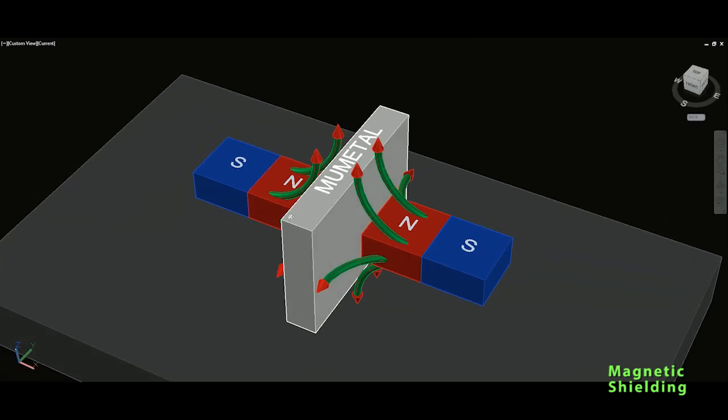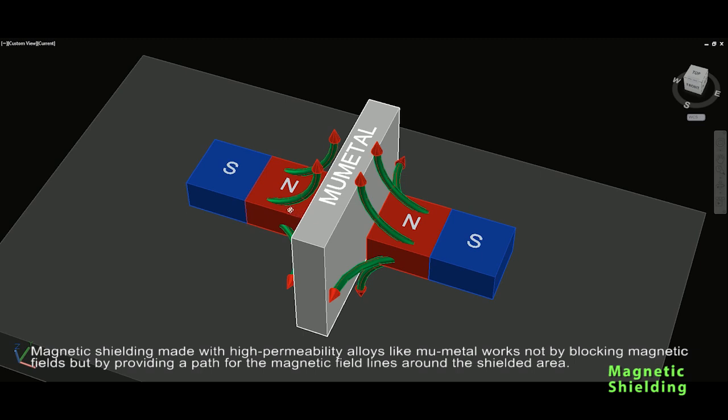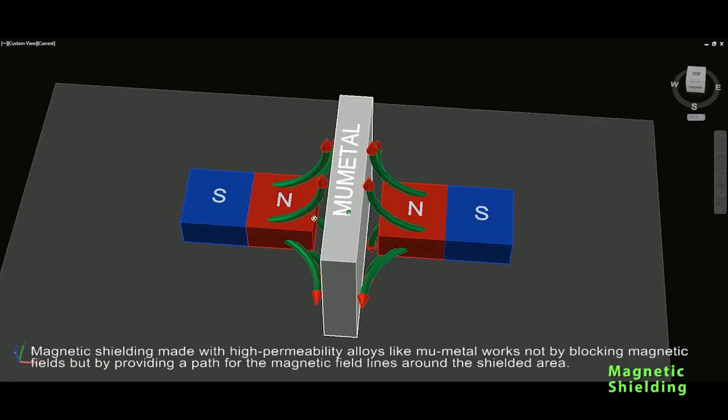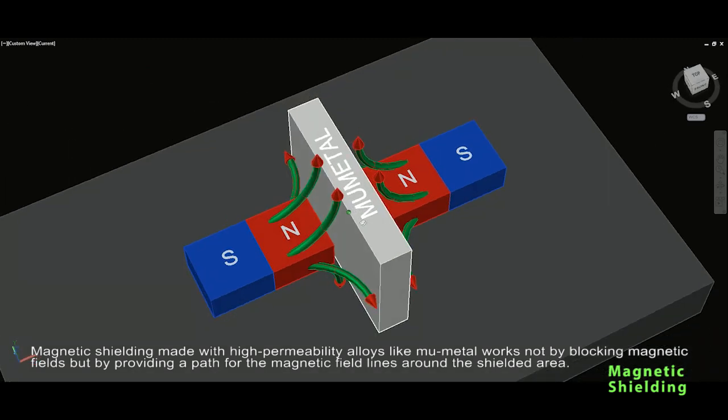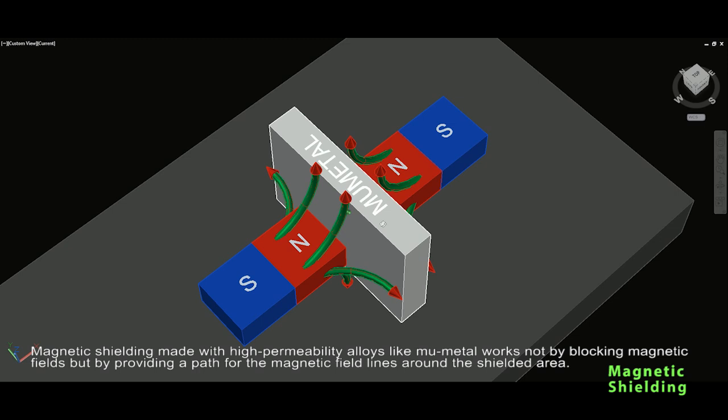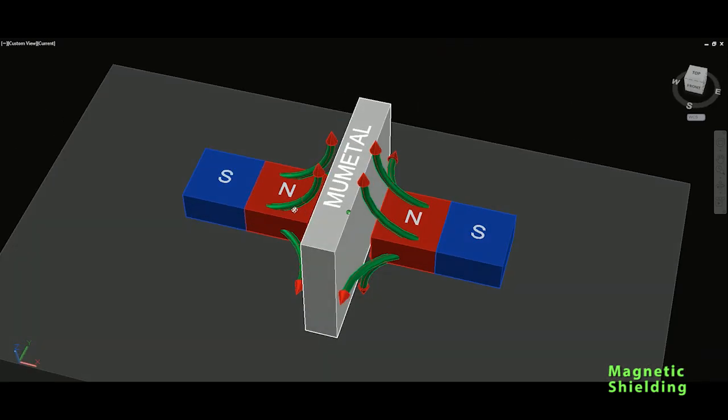And magnetic shielding made with high permeability alloy like mu metal works not by blocking magnetic fields but by providing a path for magnetic field lines around the shielded area. So you can see, these lines will go around the mu metal and that is the key.